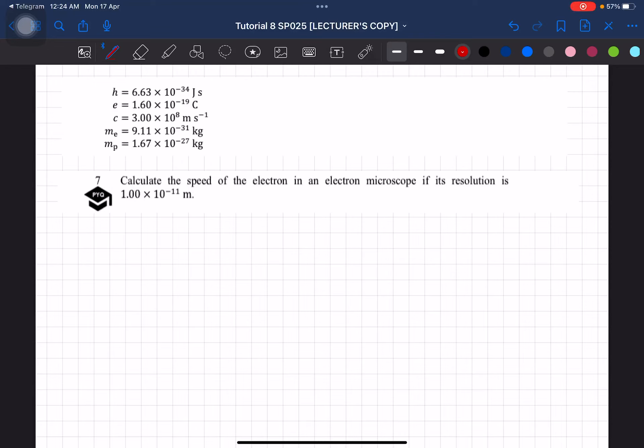Question 7. Calculate the speed of the electron in an electron microscope if its resolution is 1 times 10 to the power of negative 11 meter.